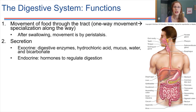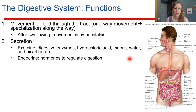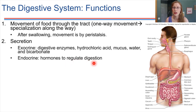Secretion is extremely important in this system. We have to be able to secrete digestive enzymes and hydrochloric acid in the stomach. Perhaps equally important is secreting mucus, which helps protect the lining of the digestive system and provides lubrication so that food can slide along as those muscular waves push it through the tract. We're also secreting water, bicarbonate, and hormones. The digestive system secretes hormones that regulate digestion and also help regulate hunger — we'll see that when we get to the stomach.